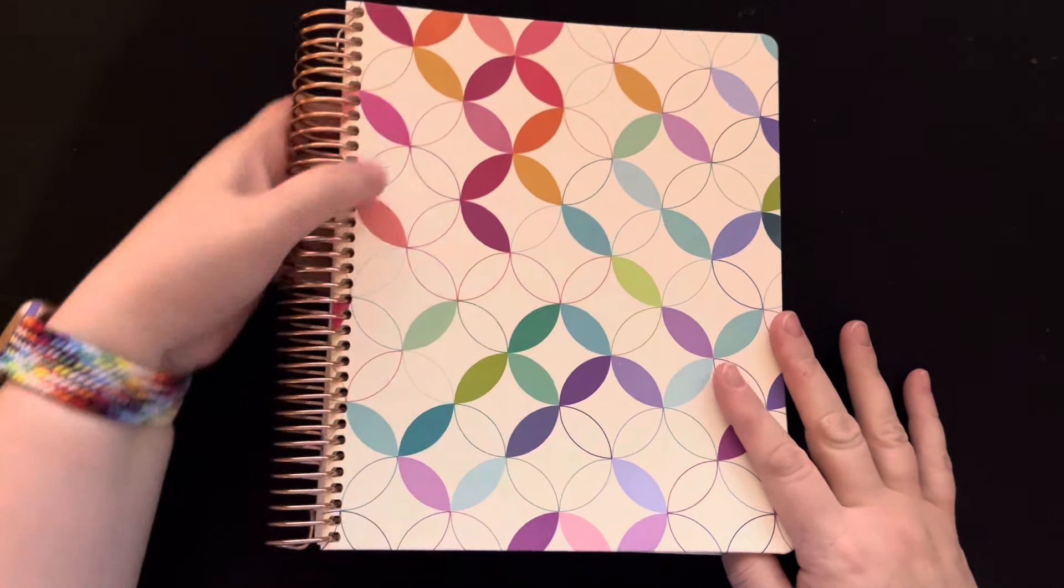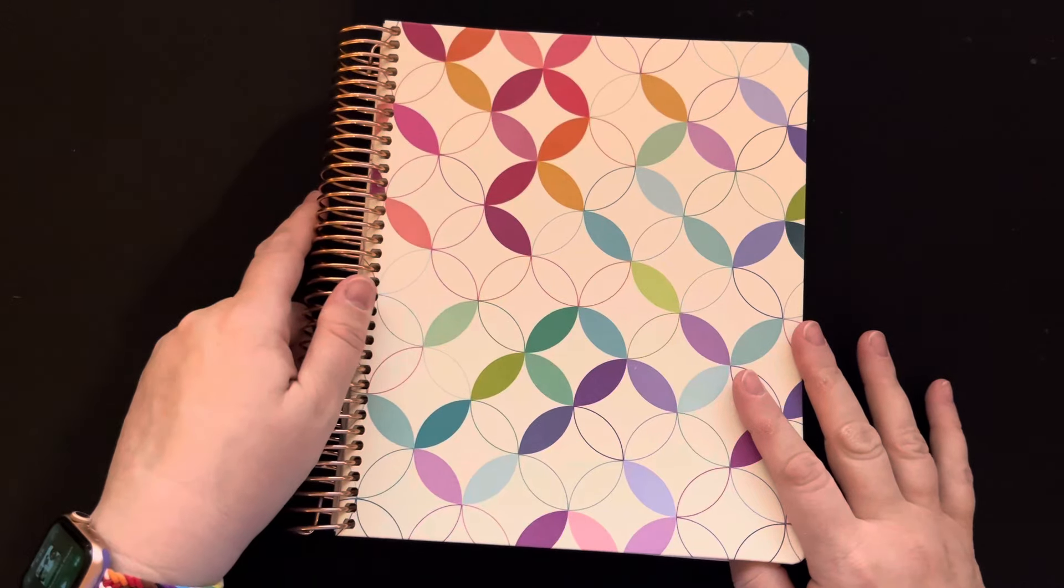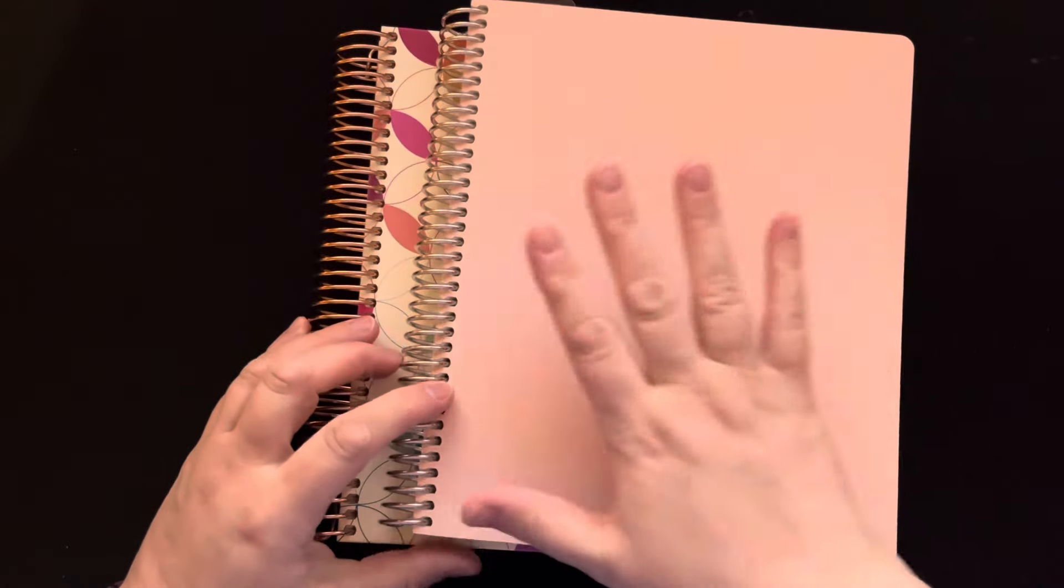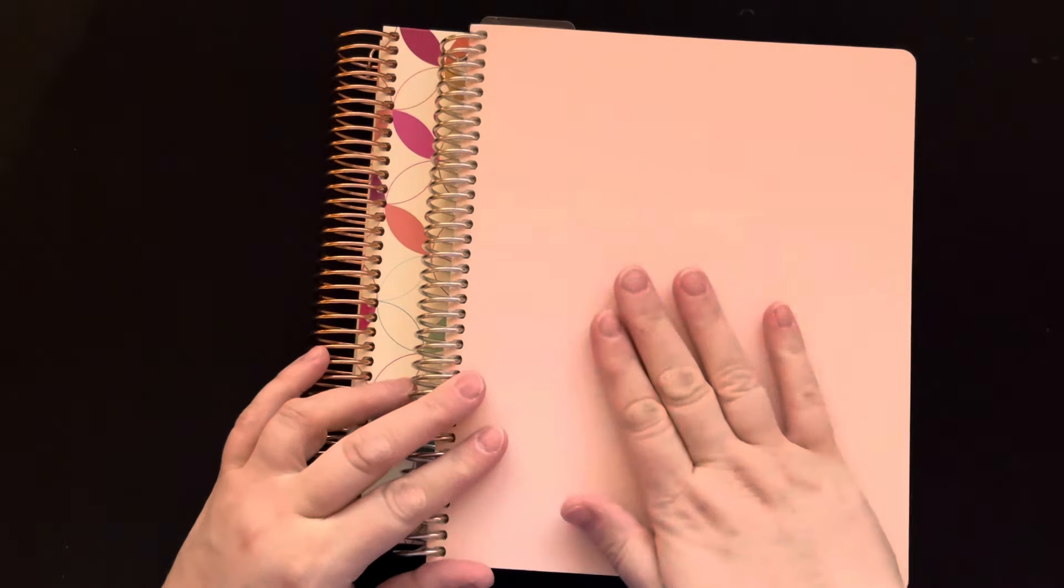It comes with the larger coil, so if you use the Erin Condren notebooks, let me show you one. This is a 7x9 notebook, just a regular notebook that I use for project management stuff.